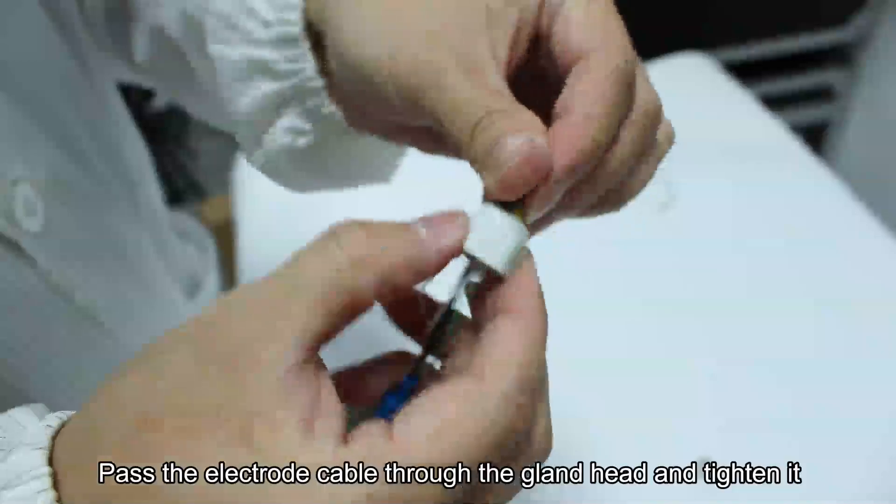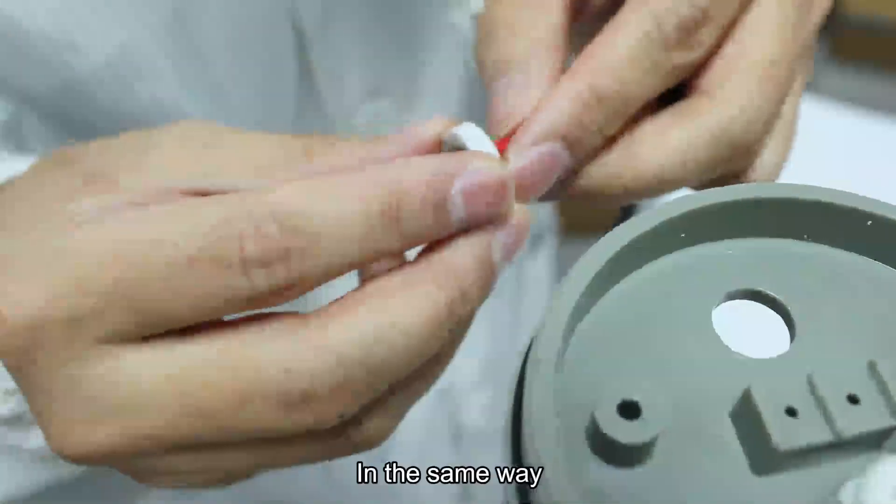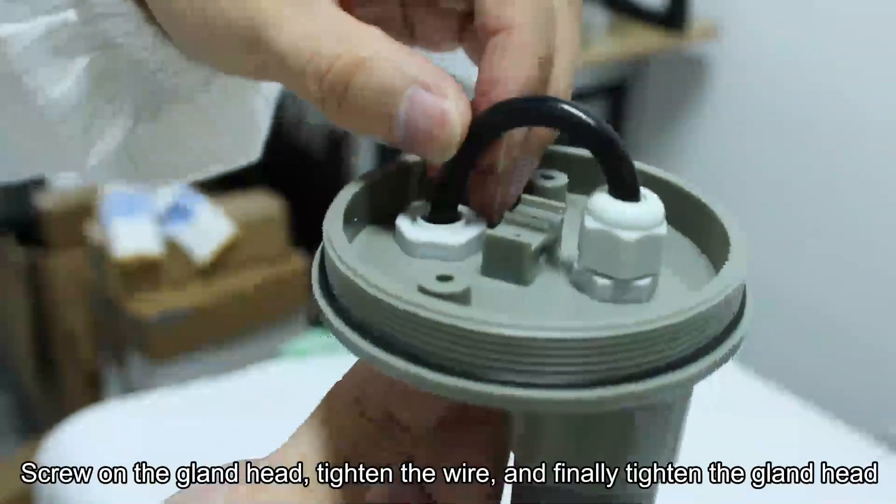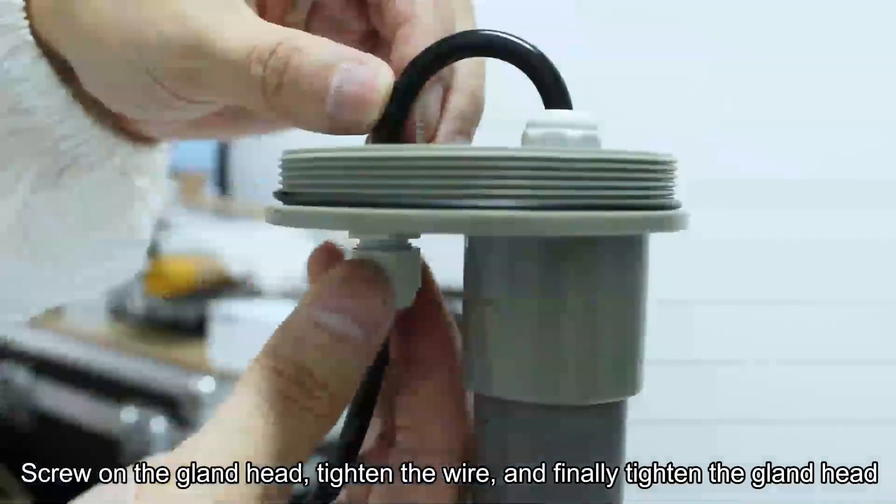Pass the electrode cable through the gland head and tighten it. In the same way, we pass the electrode cable through the other hole of the waterproof cap. Screw on the gland head, tighten the wire, and finally tighten the gland head.